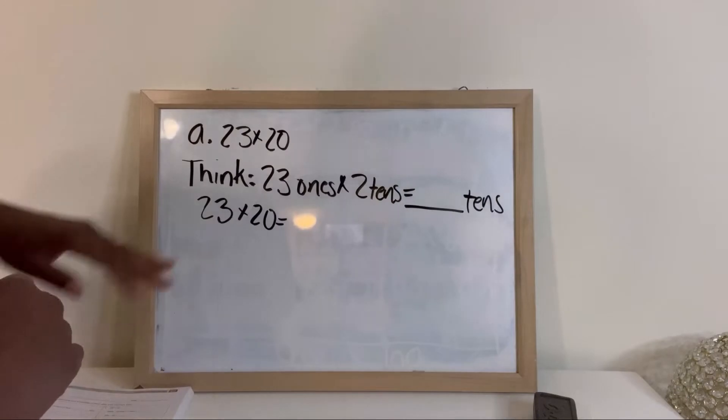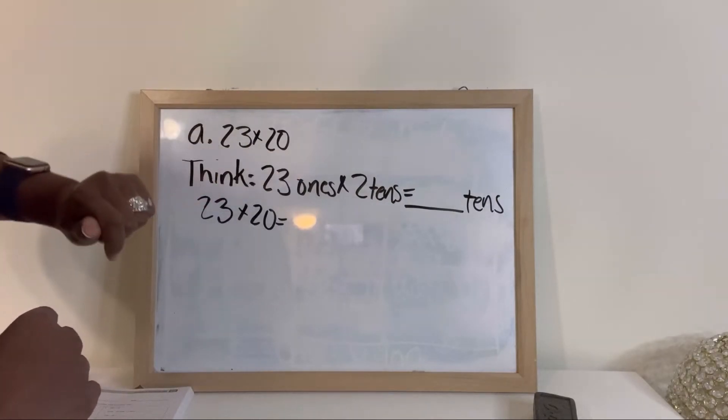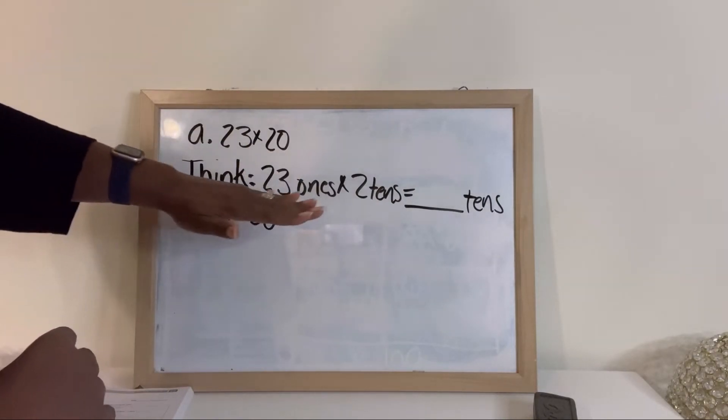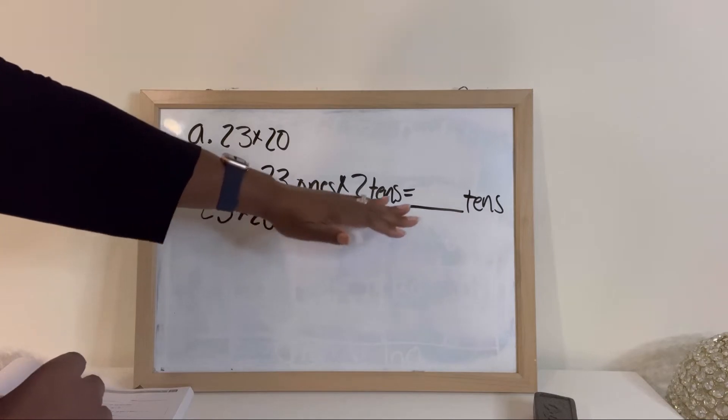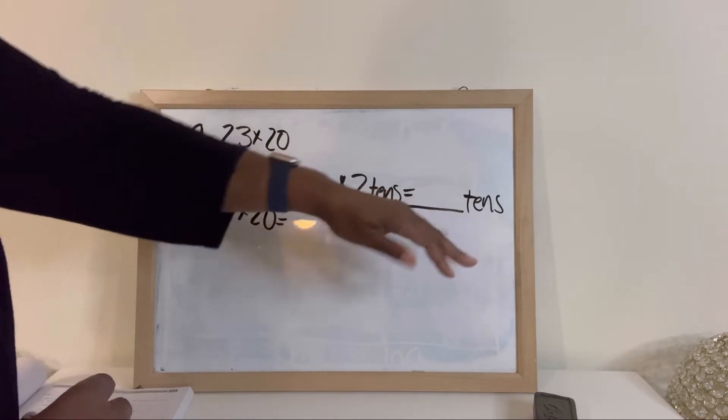We're gonna go ahead and get started. So we have 23 times 20, and we have think 23 ones times two tens equal blank tens.